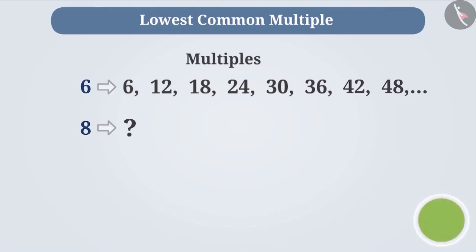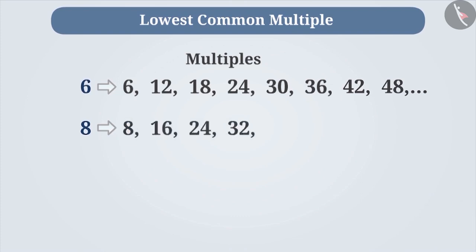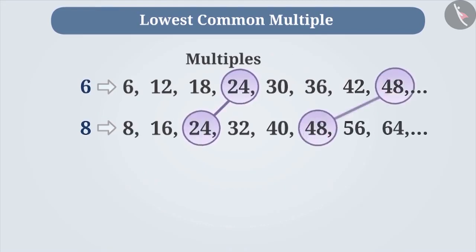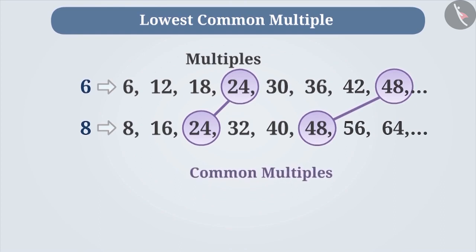You are right. The multiples of 8 are 8, 16, 24, 32, 40, 48, etc. Among the multiples of 6 and 8, 24, 48, etc. are common. These numbers are called common multiples of 6 and 8.